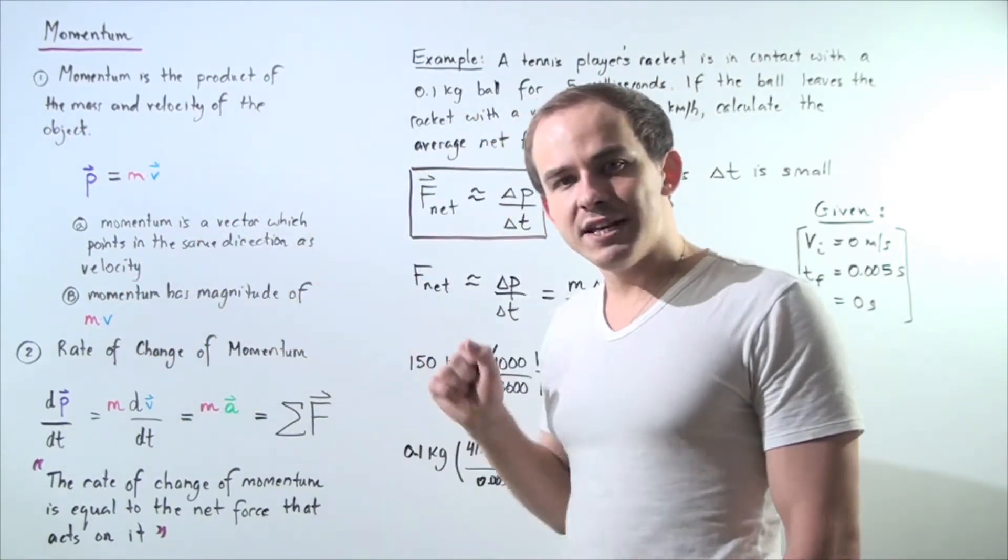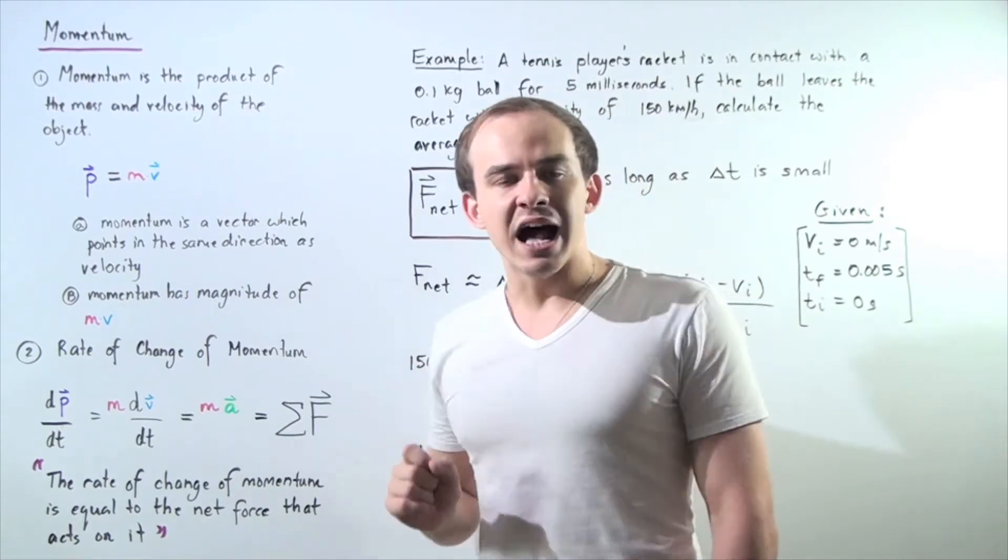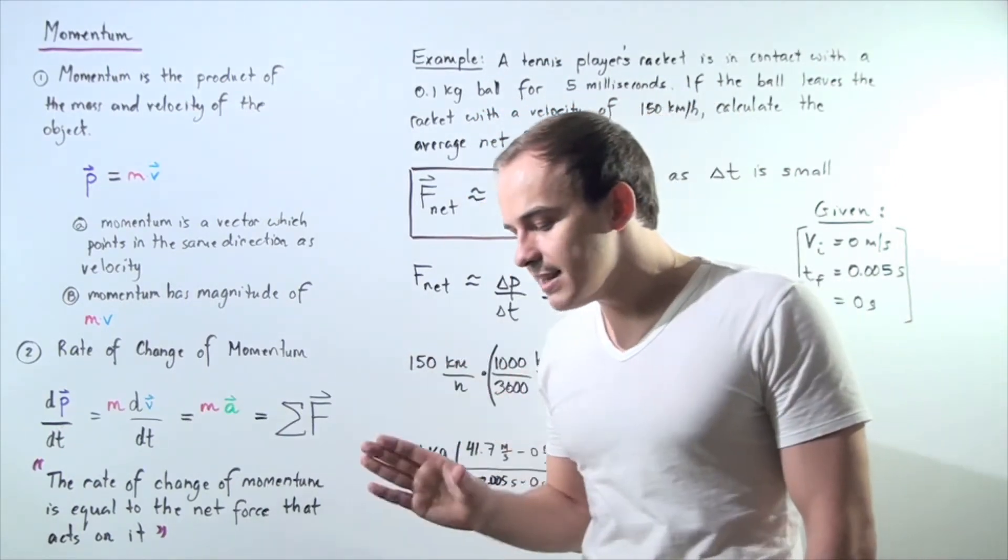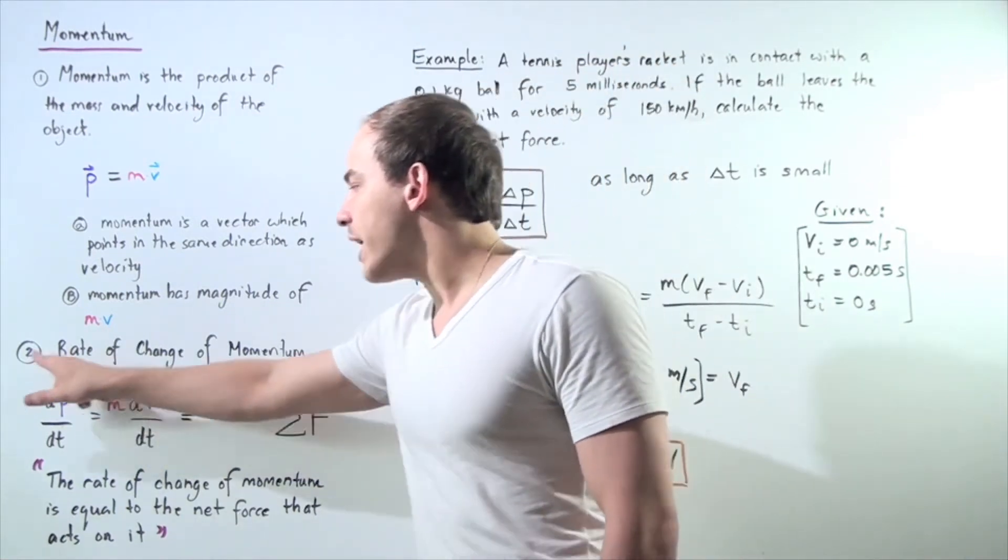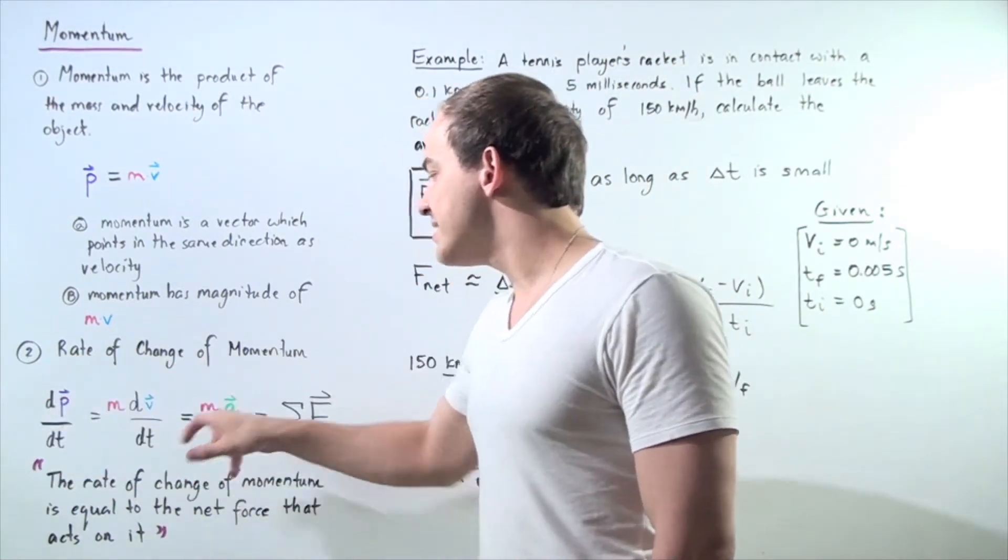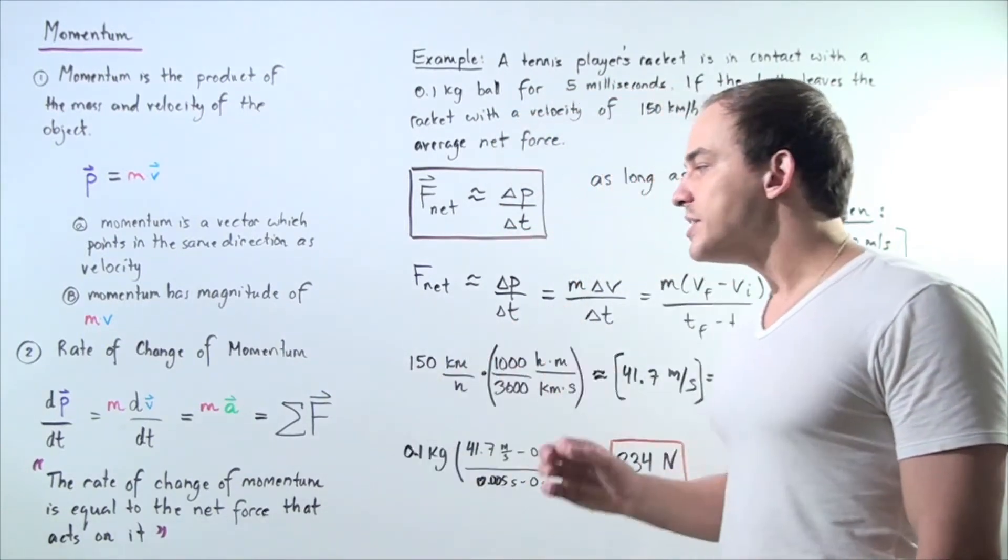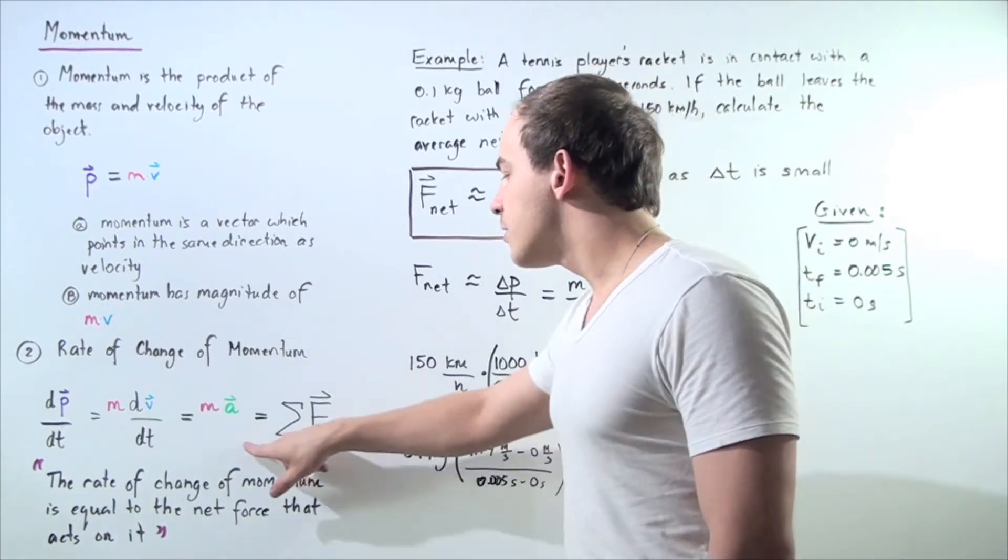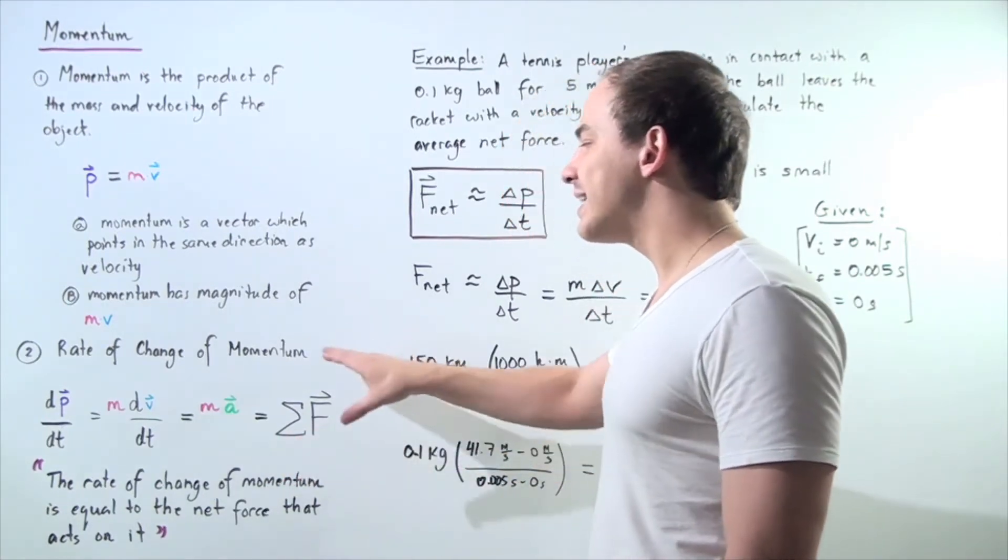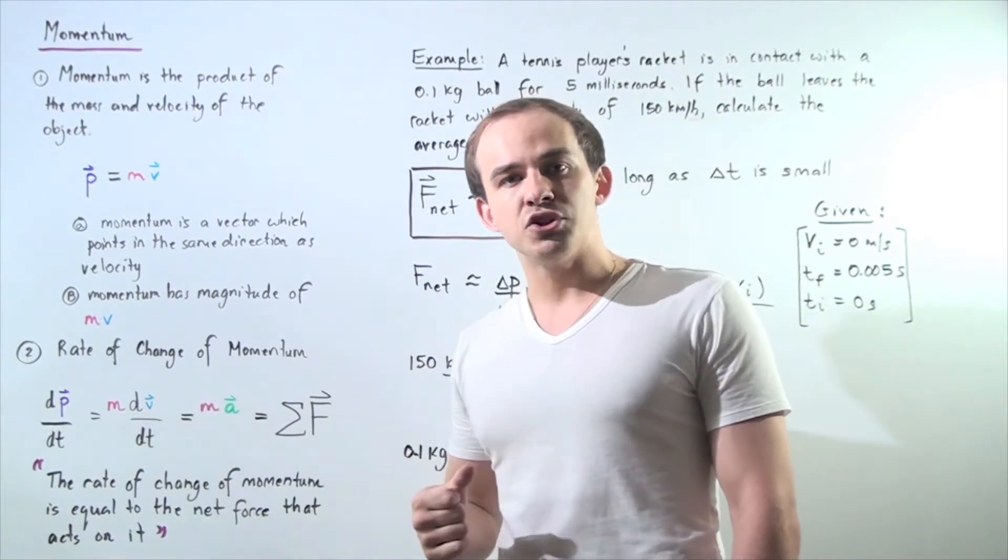By definition, the rate of change of velocity with respect to time is simply our instantaneous acceleration of that object. So we see that the rate of change of momentum is equal to mass times instantaneous acceleration, which by the second law of motion is equal to the sum of all the forces acting on our object, the net force applied on our object.